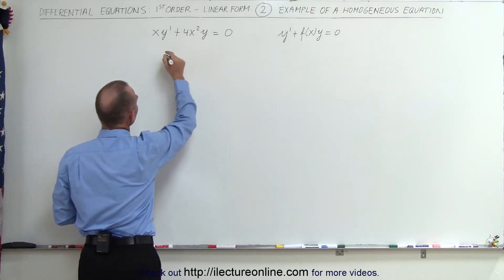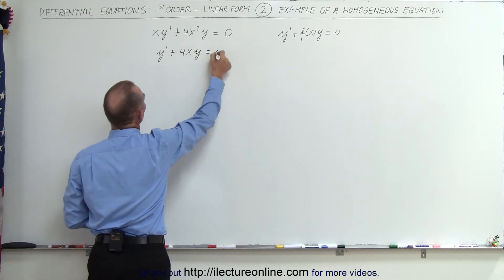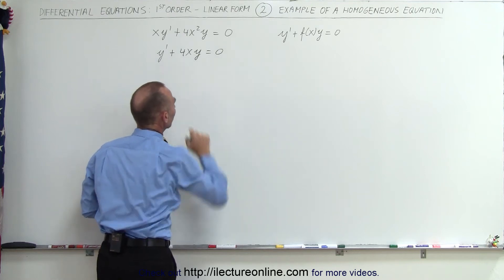When we divide both sides by x, we get y' plus 4x times y equals zero, and now it looks exactly like that with the function of x being equal to 4x.